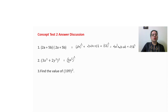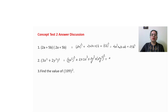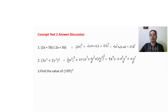Similarly you can solve the next one also: first term whole square plus 2 into first term into second term plus second term whole square. Write down the answer: 9x to the power 9 plus 12x cube y cube plus 4y to the power 6.